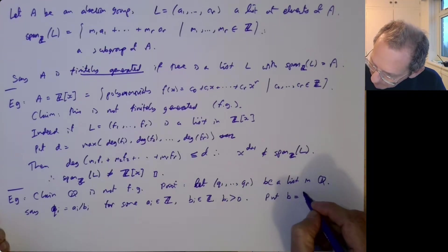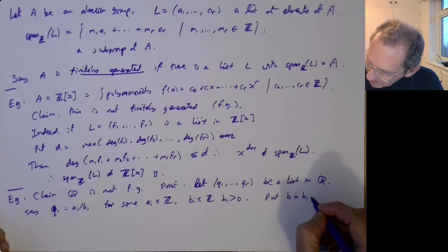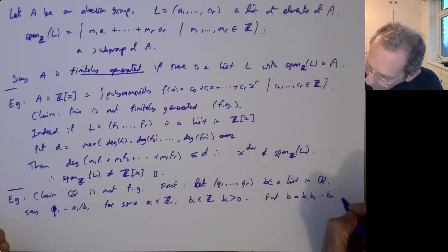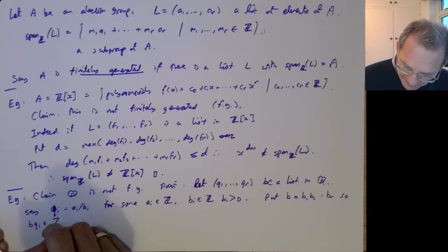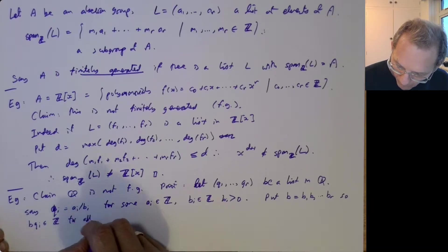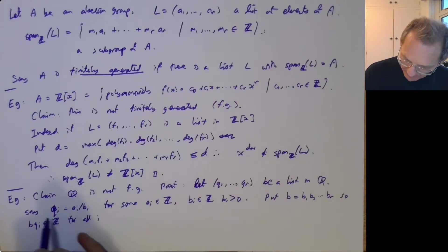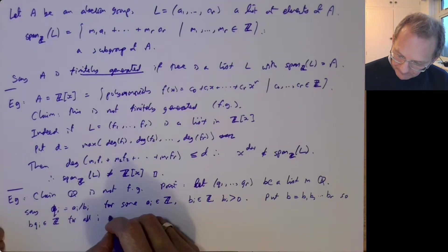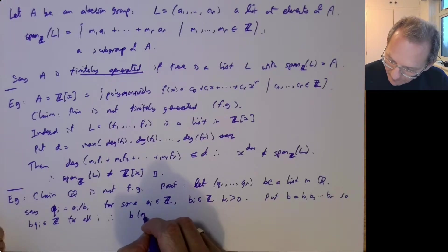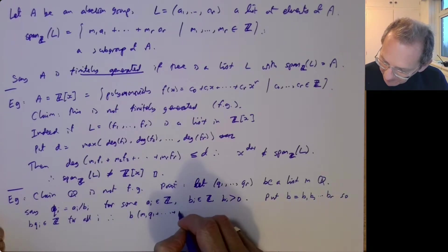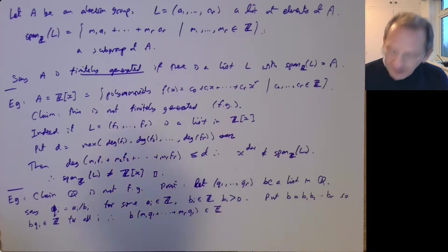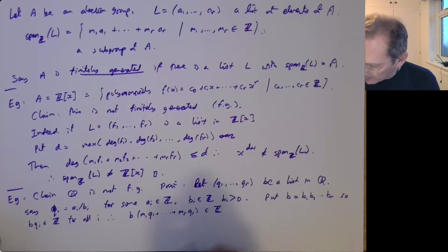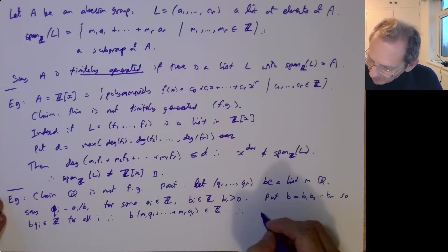So let B just be the product of these denominators. So it's easy now to see that BQI is an integer, because BI appears as a factor in B. So when you multiply QI by B, then that cancels out, you just get an integer. And so if we take a thing like M1Q1 up to MRQR and we multiply it by B, then that'll be in Z.